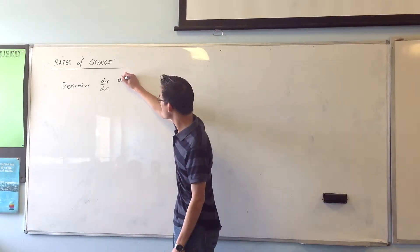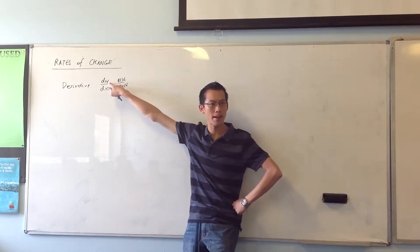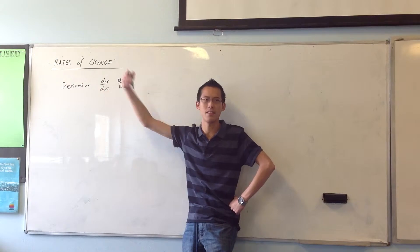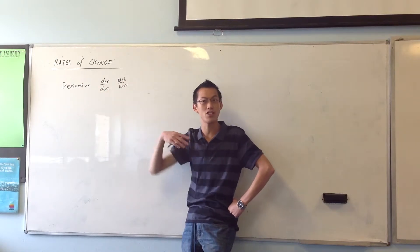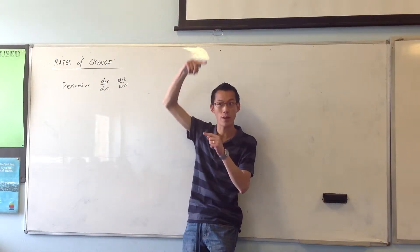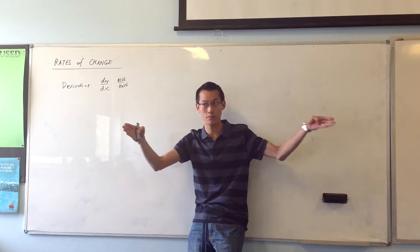So rise over run, if you remember back to when we were doing first principles, that d is like the delta in science, it means change. So change in y, that's what we really mean by rise, like how far is something going up. And change in x is what we mean by run, how far is it going horizontally.